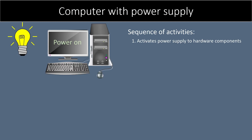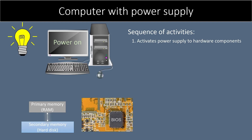Then in the next step, the operating system must be loaded into the primary memory RAM from the secondary memory hard disk. How does this happen? This is done with the help of BIOS — Basic Input-Output System — which is a very small piece of instruction code contained on a chip on your system's motherboard. BIOS is the first software that runs.